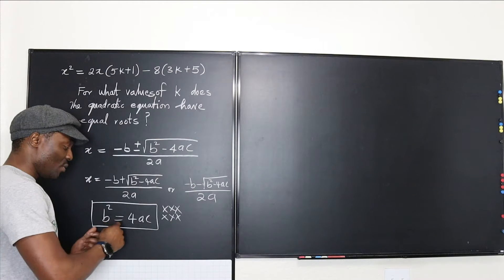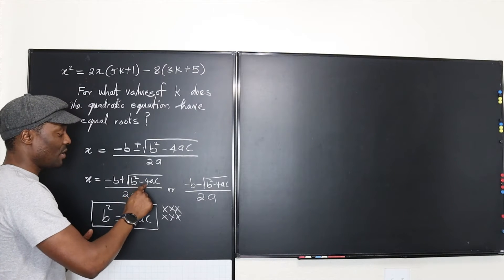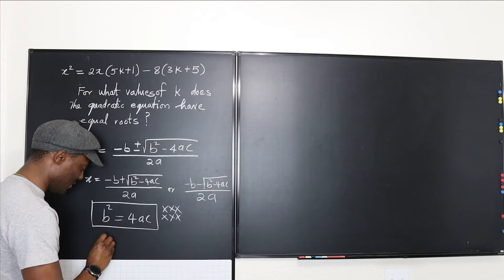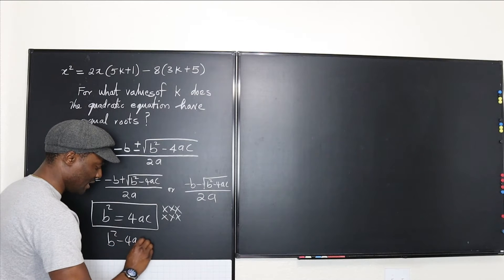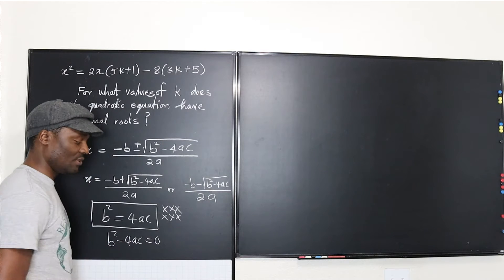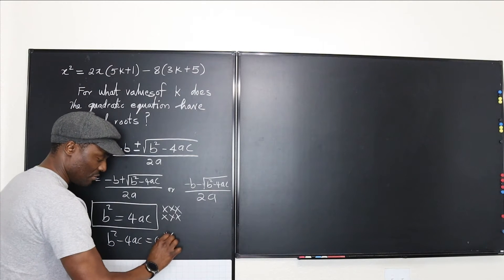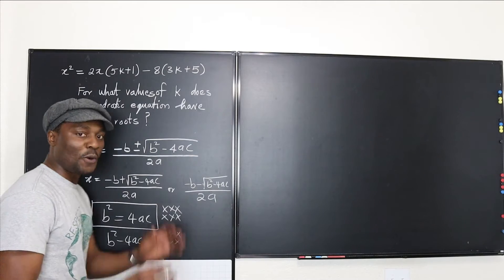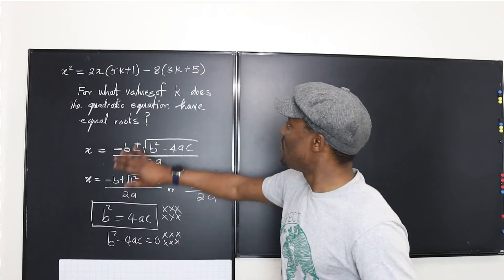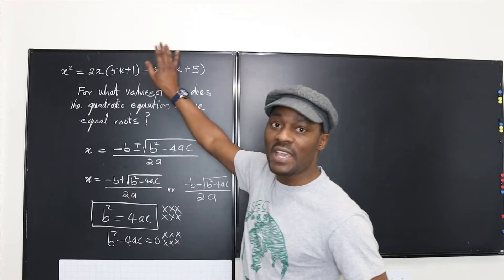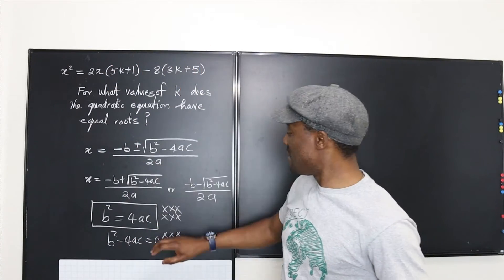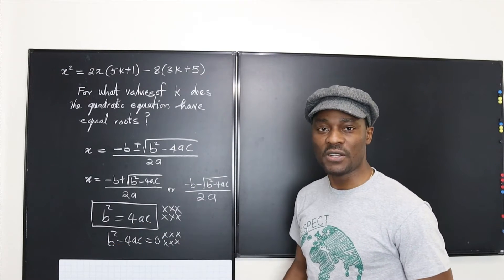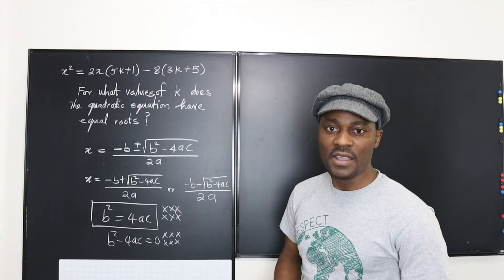Some people say b squared equals 4ac, or b squared minus 4ac is equal to zero — that's another way to express the same thing. So our focus is just to look for the values of k that will make b squared minus 4ac equal to zero. Let's do that on this side.